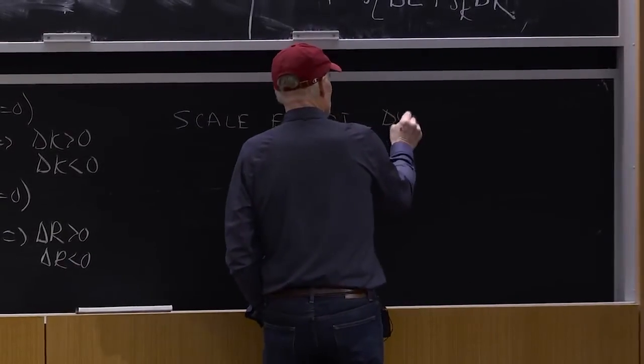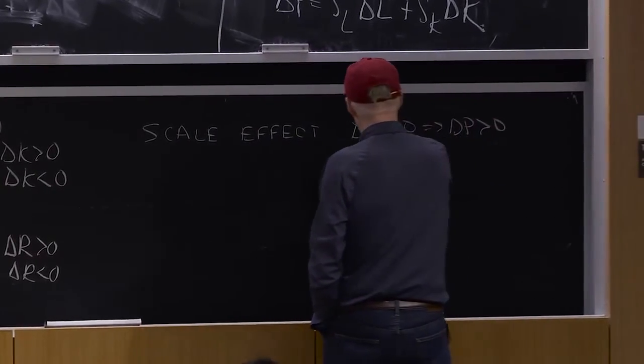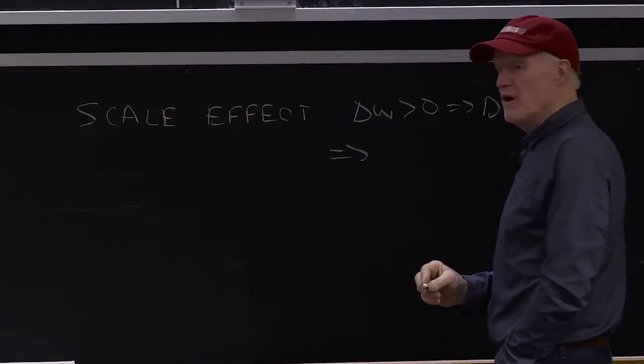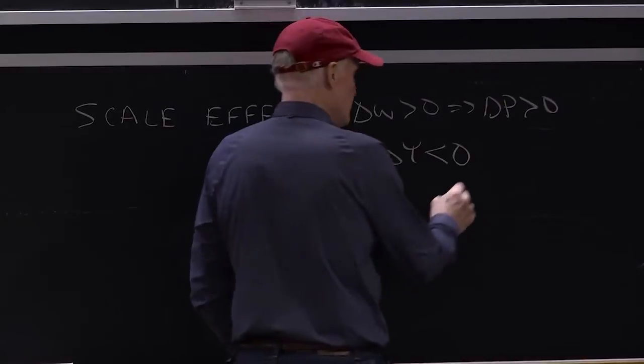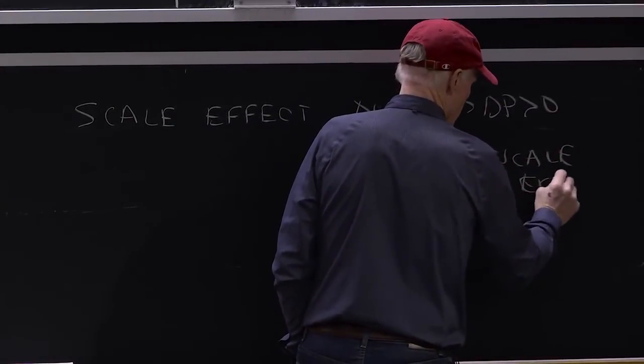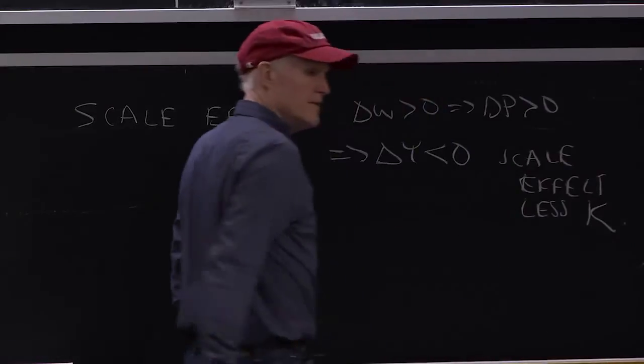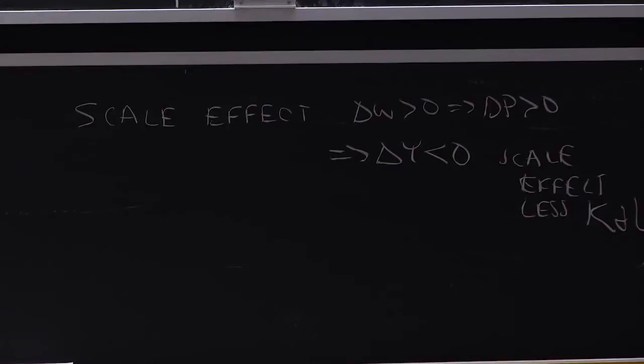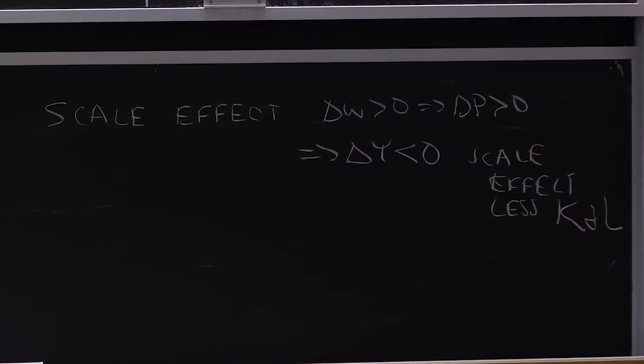So delta W is greater than zero implies delta P is greater than zero implies what? Delta Y is less than zero. And if I have scale effect, less K and L, right? That is, the scale effect is always going to be pushing L and K back. The scale effect tends to make these inputs complement.